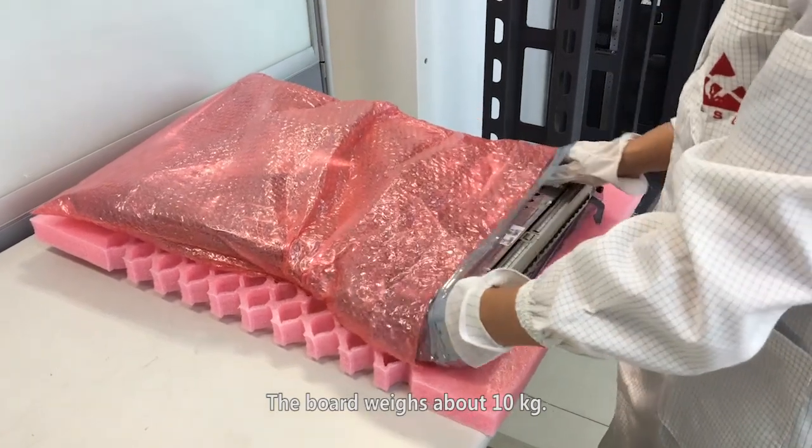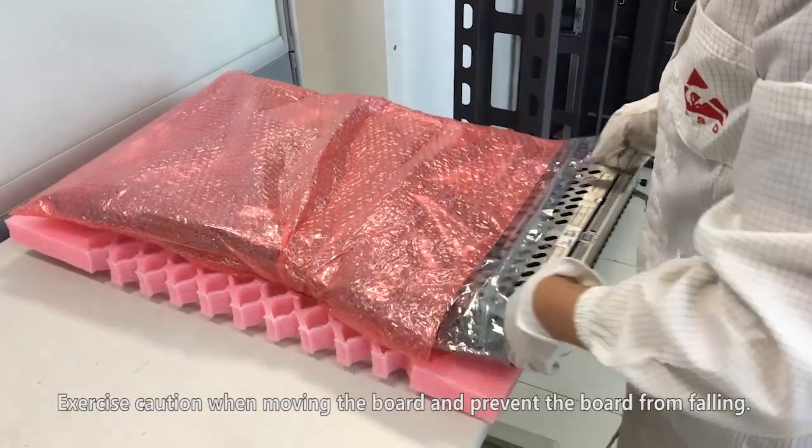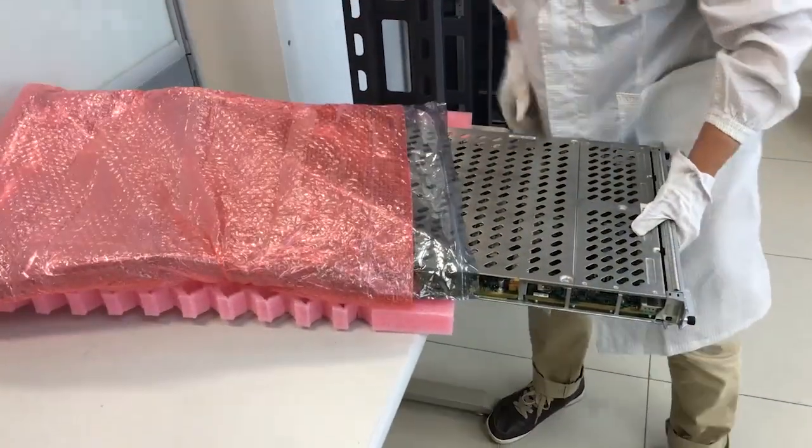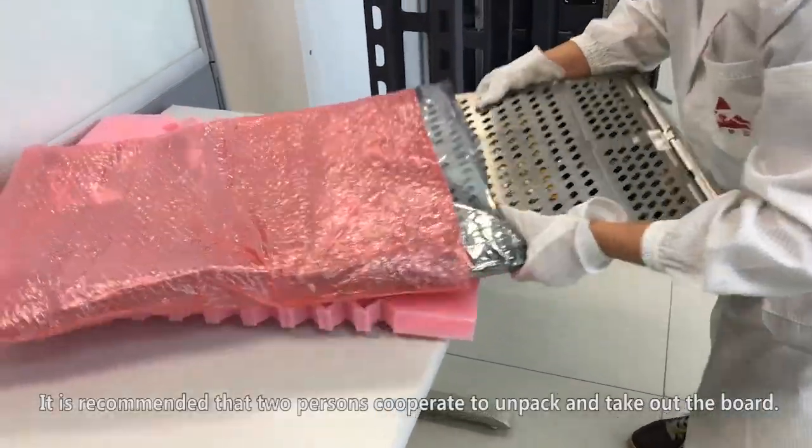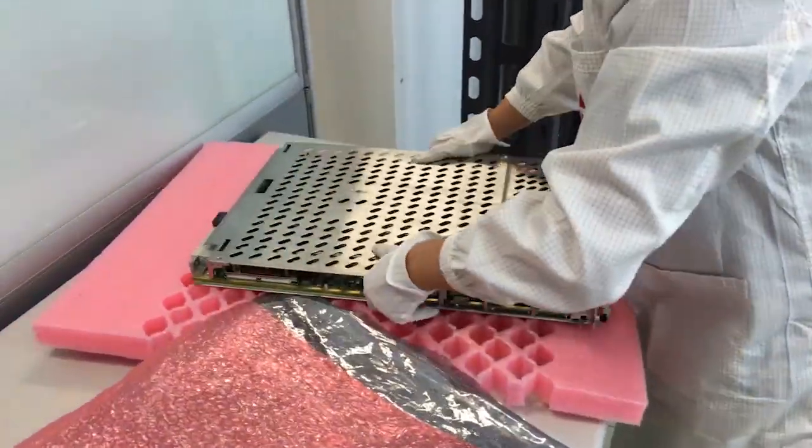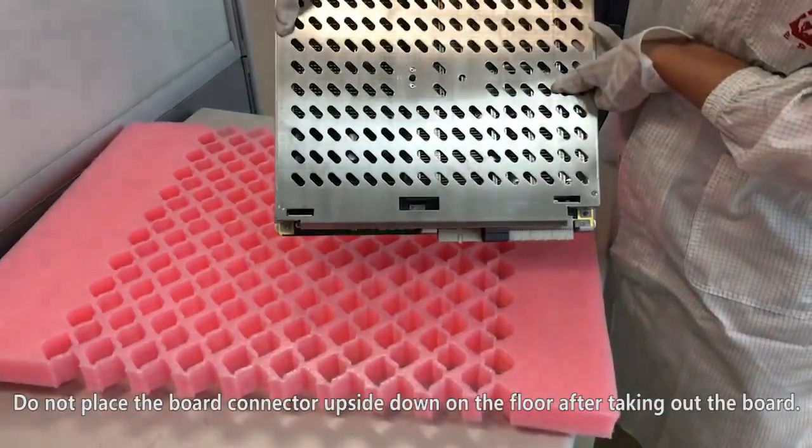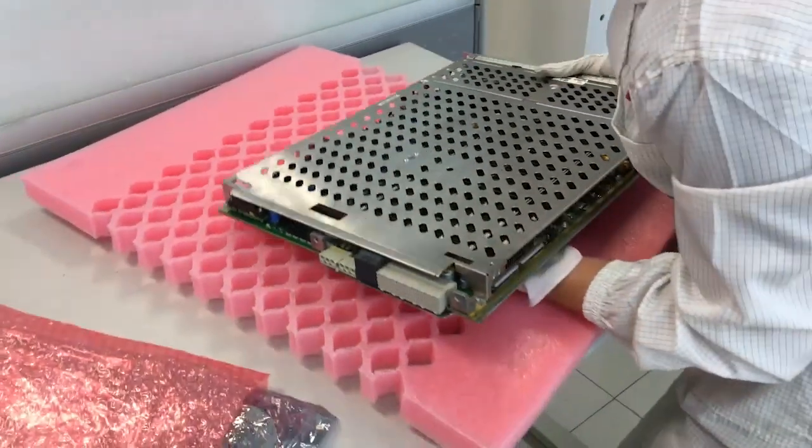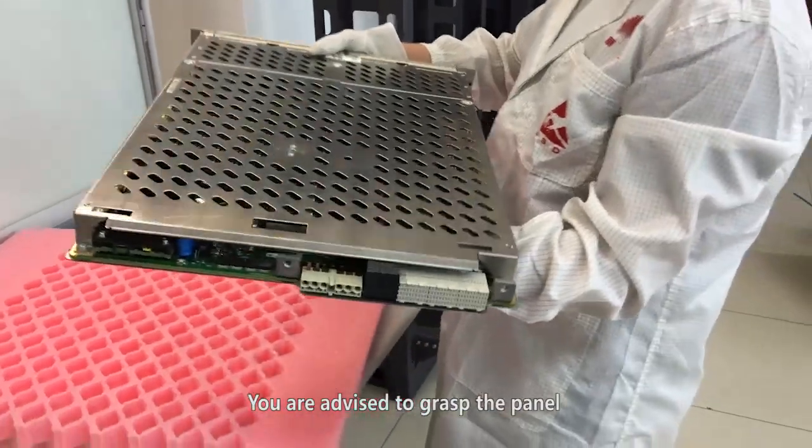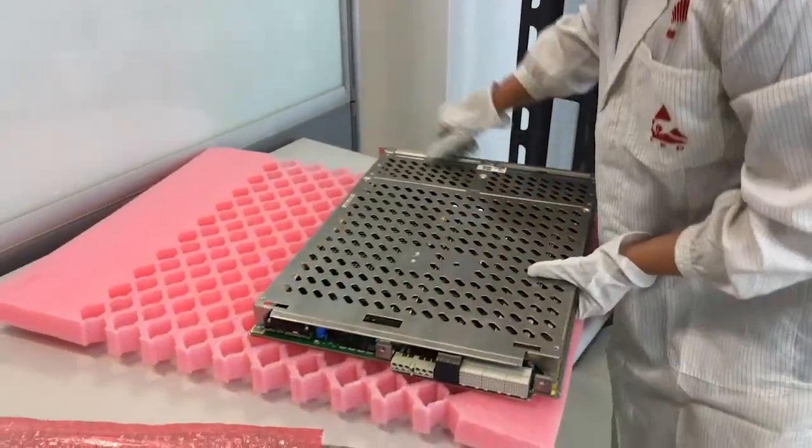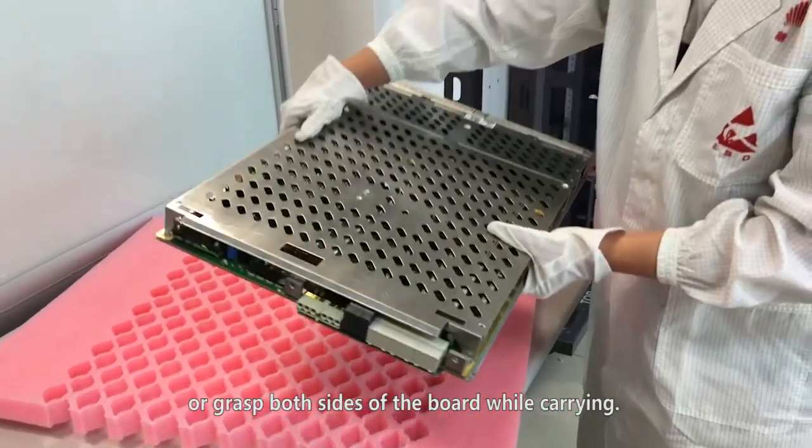The board weighs about 10 kilograms. Exercise caution when moving the board and prevent the board from falling. It is recommended that two persons cooperate to unpack and take out the board. Do not place the board connector upside down on the floor after taking out the board. You are advised to grasp the panel with one hand and hold the bottom with the other hand, or grasp both sides of the board while carrying.